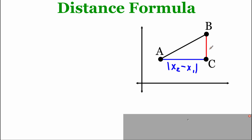For our other length, I'm going to focus on this red segment that goes from B to C. That one goes up and down vertically, so we're going to focus on the y-values there. That length is going to be the absolute value of y2 minus y1. Now these two values — x2 minus x1 and y2 minus y1 — we're going to use those in our distance formula.